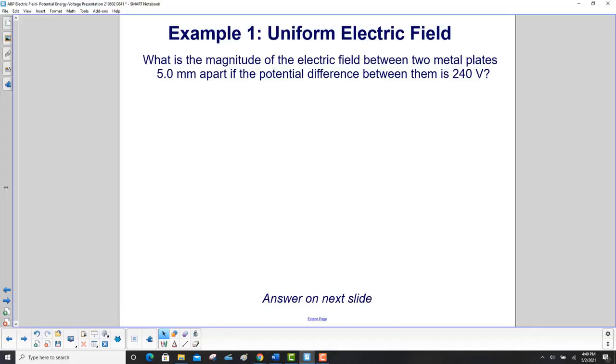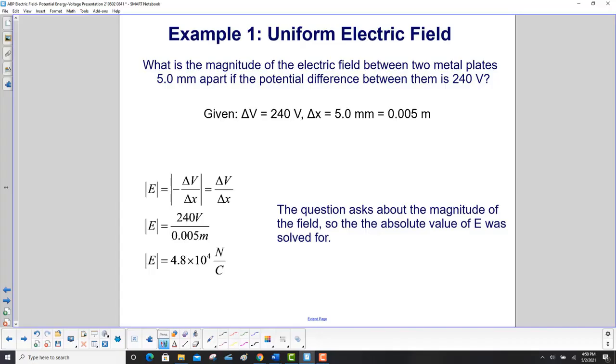What is the magnitude of the electric field between two metal plates five millimeters apart if the potential difference between them is 240 volts? So we have given the difference in potential is 240 volts. The distance between the plates is five millimeters, which we have to convert into meters. So we move the decimal place over three and we get point zero zero five meters. We use our equation here and we're going to take the absolute value because we're just interested in the magnitude. So we have 240 volts divided by 0.005 meters and we get 4.8 times 10 to the fourth newtons per coulomb or volts per meter. They're equivalent those units.